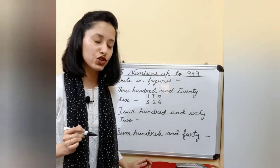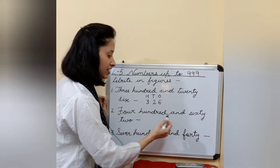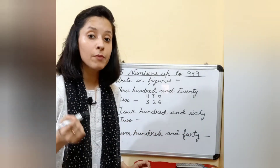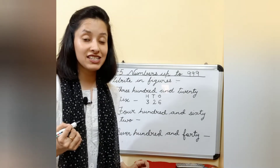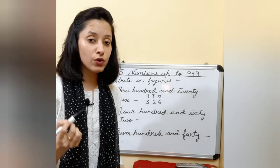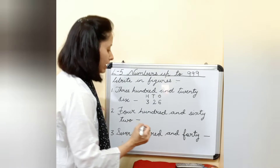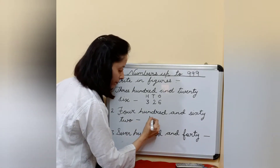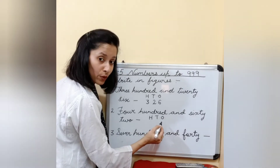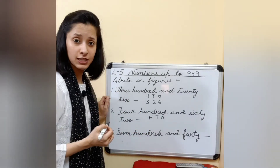Now see the next example, children. Let's read it together: four hundred and sixty-two. By four hundred, you understand again that it is a three-digit number. So the first thing you are going to do is write H, T, O. O stands for ones place, T stands for tens place, H stands for hundreds place.